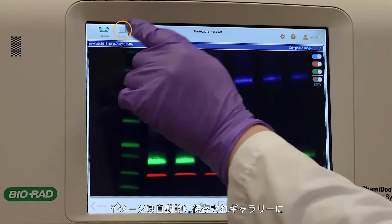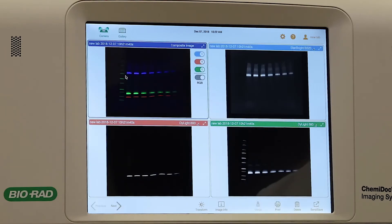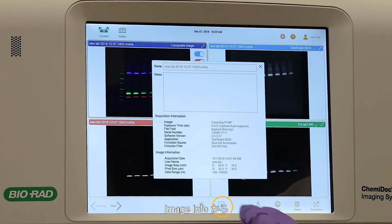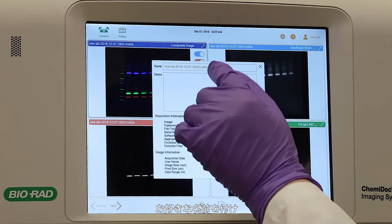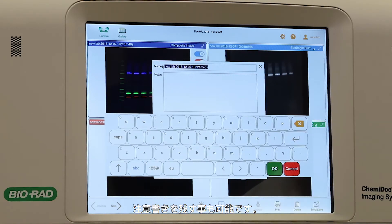Your images will be automatically saved and exported to the gallery. Tap the Image Info icon. Here you can enter a custom name and any notes you'd like to include about your image or experiment.